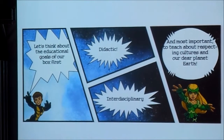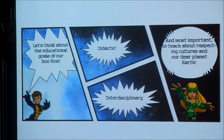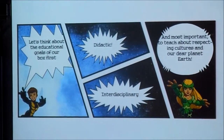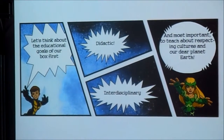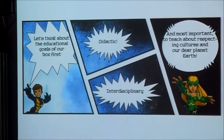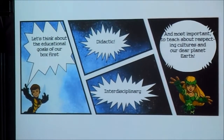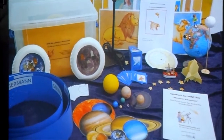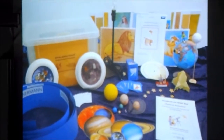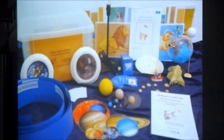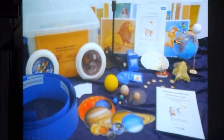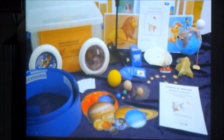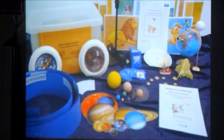So we start thinking about what the box should have. It should be didactic — it should give teachers a clue about the topics. It should help them understand which age group fits which topic. They worked for two years to develop this resource, which focuses on different areas from stars to planets.